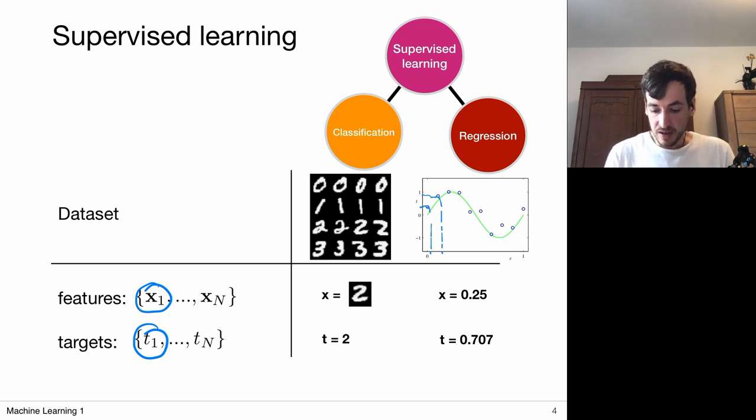And this target can only take on values of this predefined subset of classes. In the digit classification case, it could only be a 0, a 1, and so forth, up to a 9. So we could only choose out of 10 classes. So that's characteristic of classification that the output target is a discrete label.